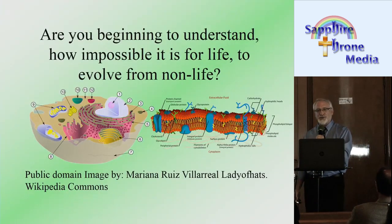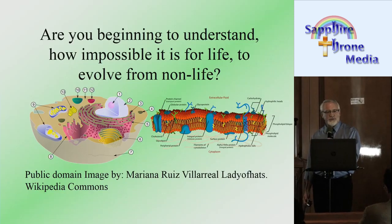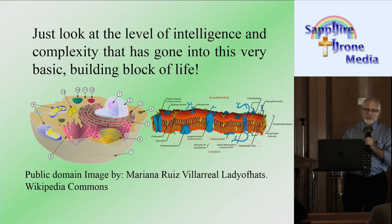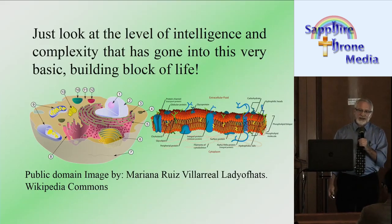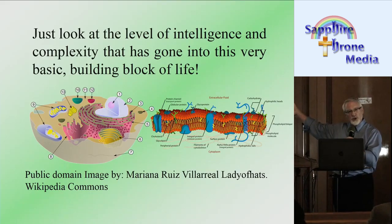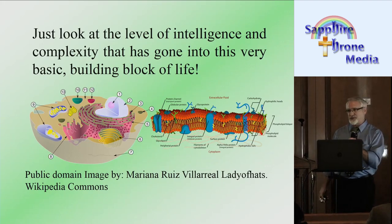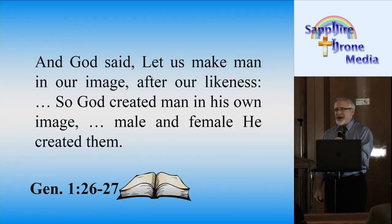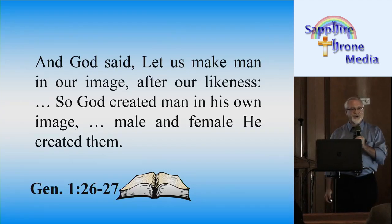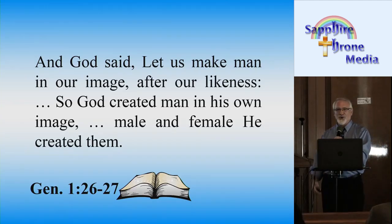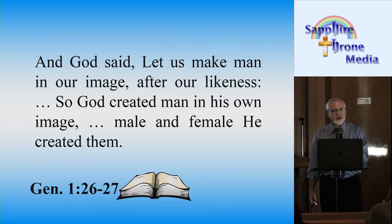Are you beginning to understand how impossible it is for life to evolve from non-life? Just look at the level of intelligence and complexity that has gone into this very basic building block — the lowest level at which life exists. And God has said, 'Let us make man in our image after our likeness.' So God created man in his own image — male and female he created them.